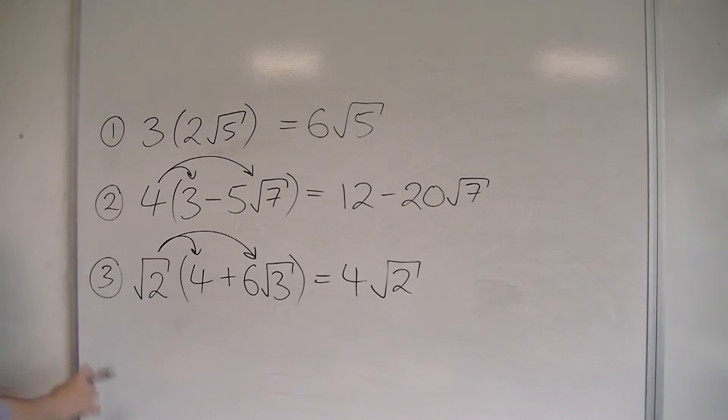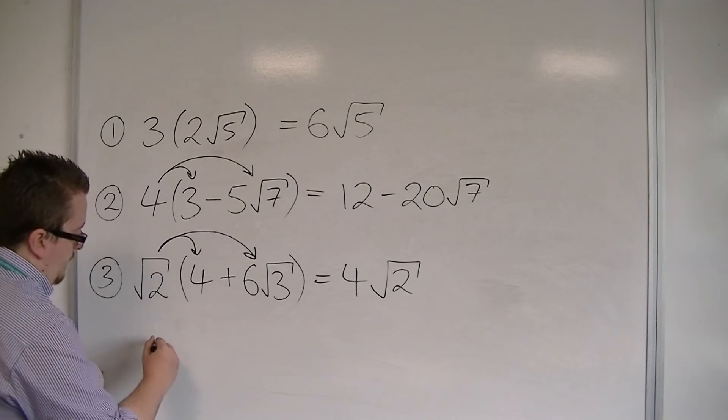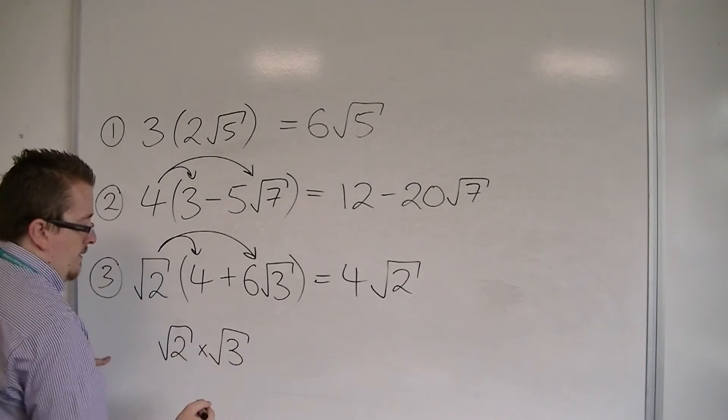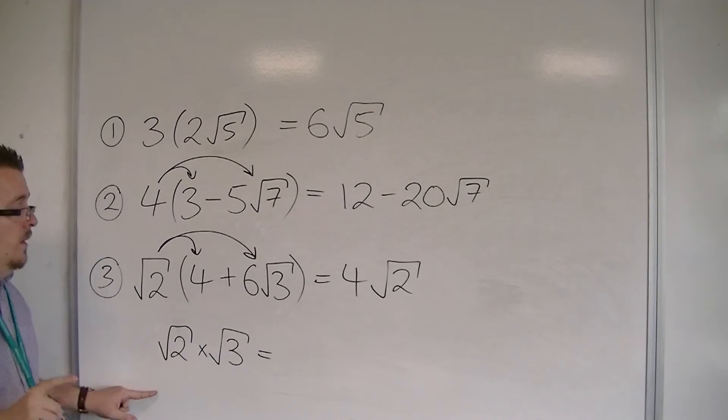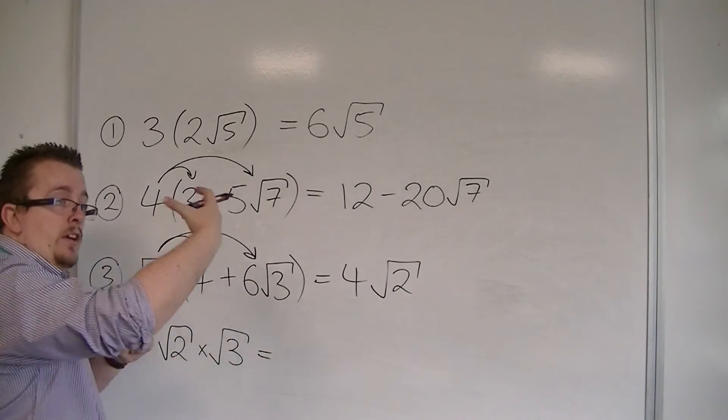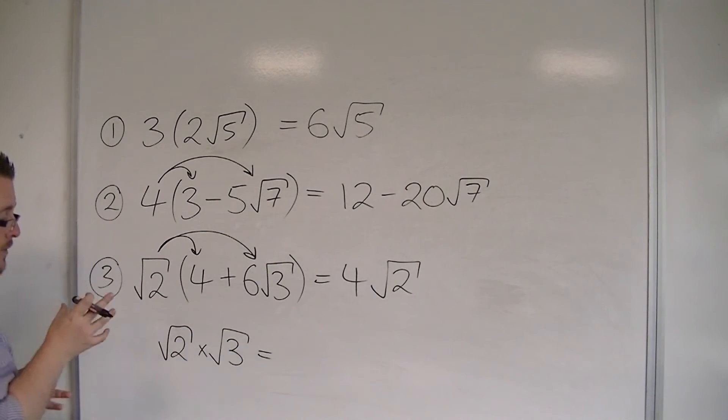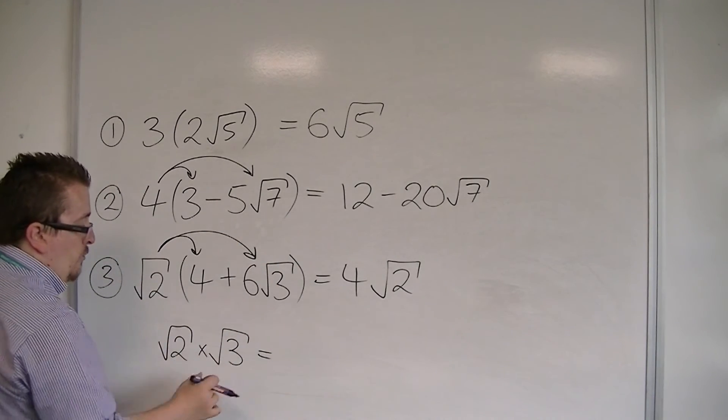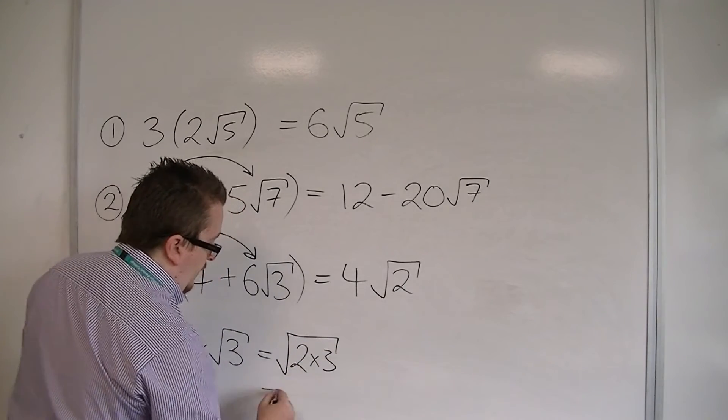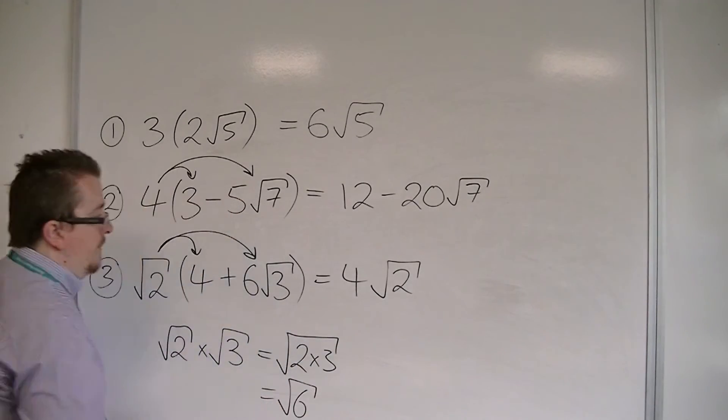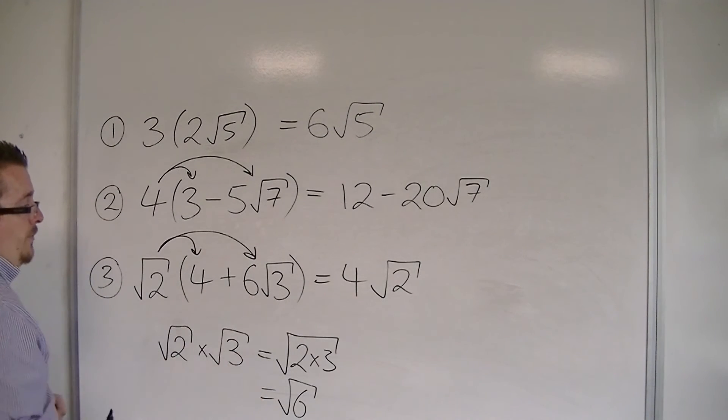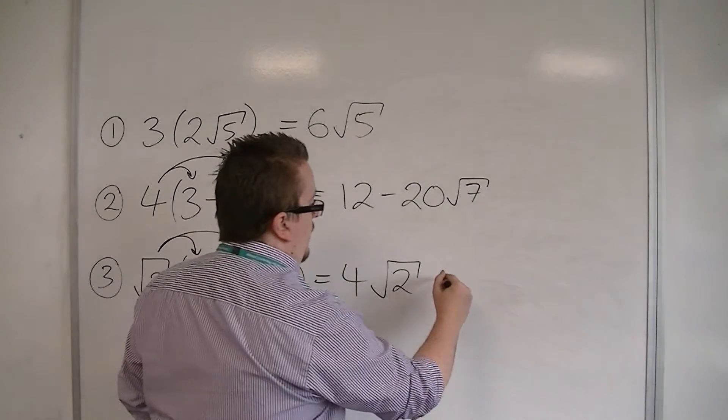Then we've got root two times six root three. Now, the thing is, we've got the root two times the root three. So root two times root three. Now, we know that when I have root ab, I can then split it to root a times root b. So I can do it backwards. So root two times root three is the same as the square root of two times three. So that's the same as the square root of six. So the root two multiplies with root three to make root six. So I'm left with six root six.